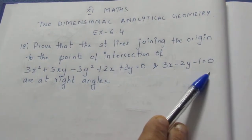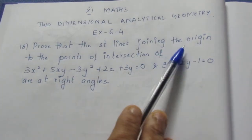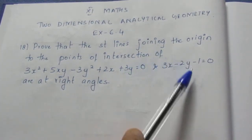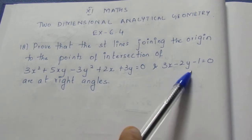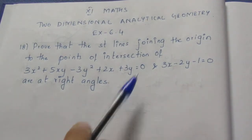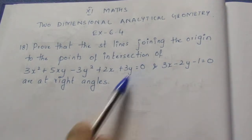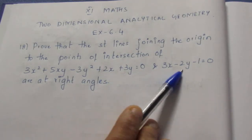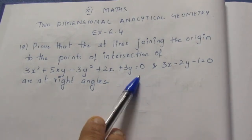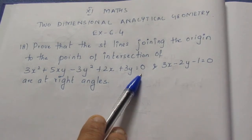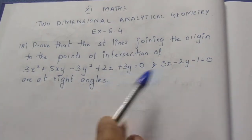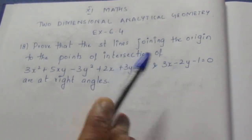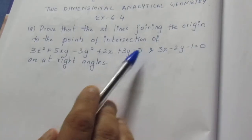In the two straight lines, we are talking about lines passing through the origin. This involves a right angle at the point of intersection. What we do here is homogenizing the equation — combining the two equations into a single equation.